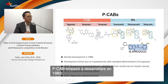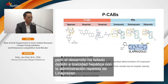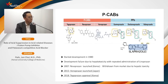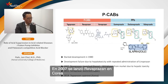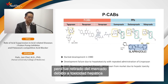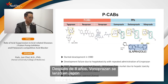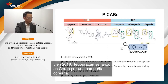PCAB development started in 1980, but repeated development failures due to hepatotoxicity occurred, including linaprazan. In 2007, revaprazan launched in Korea but was withdrawn from market due to hepatic toxicity. After eight years, vonoprazan from Japan launched. Two years ago, tegoprazan — from a Korean company — was approved and launched in Korea.